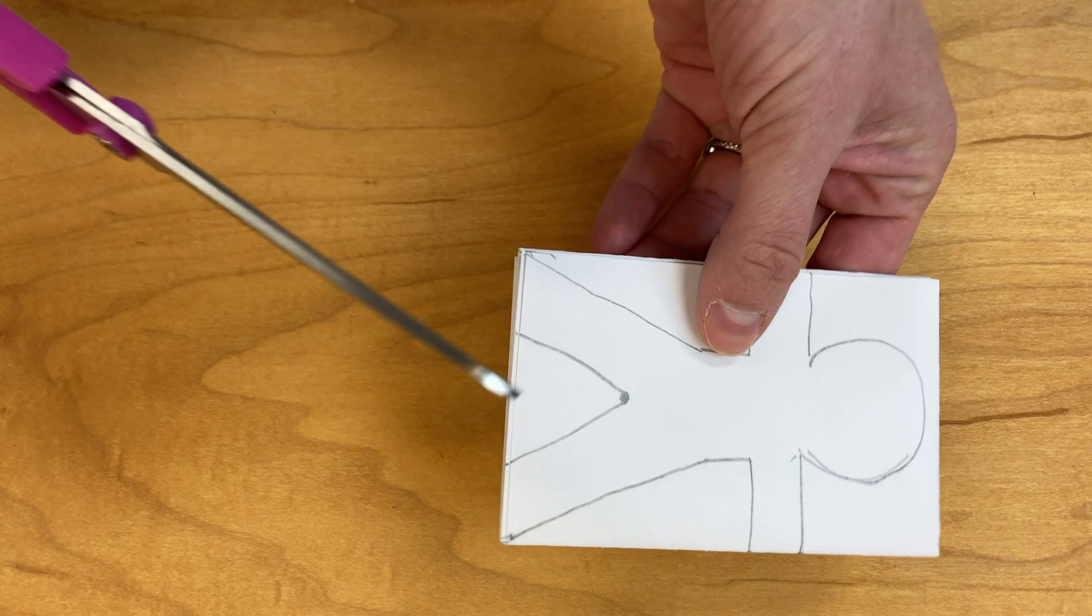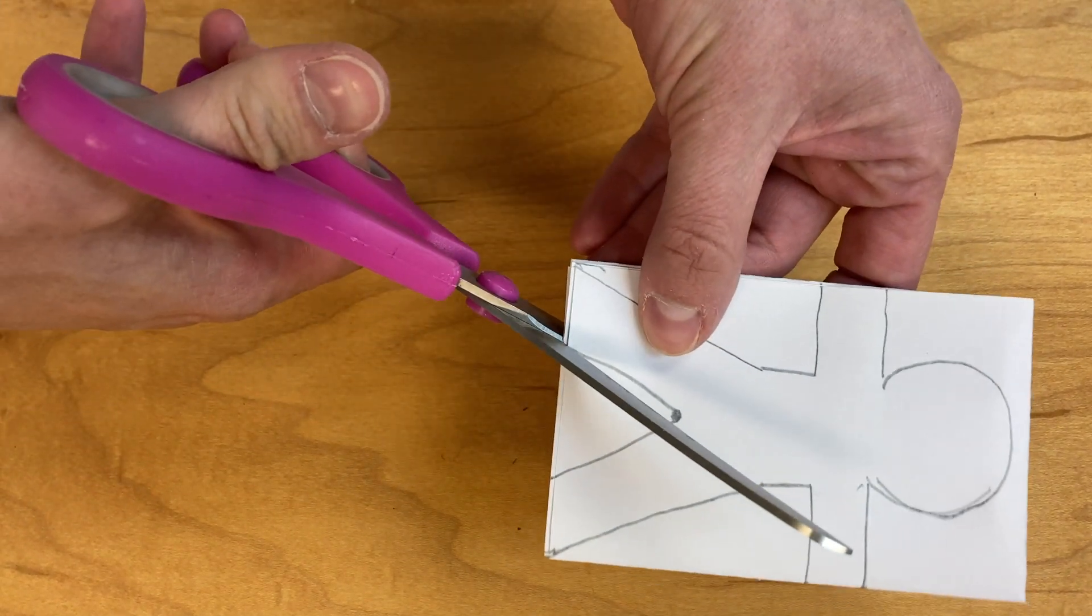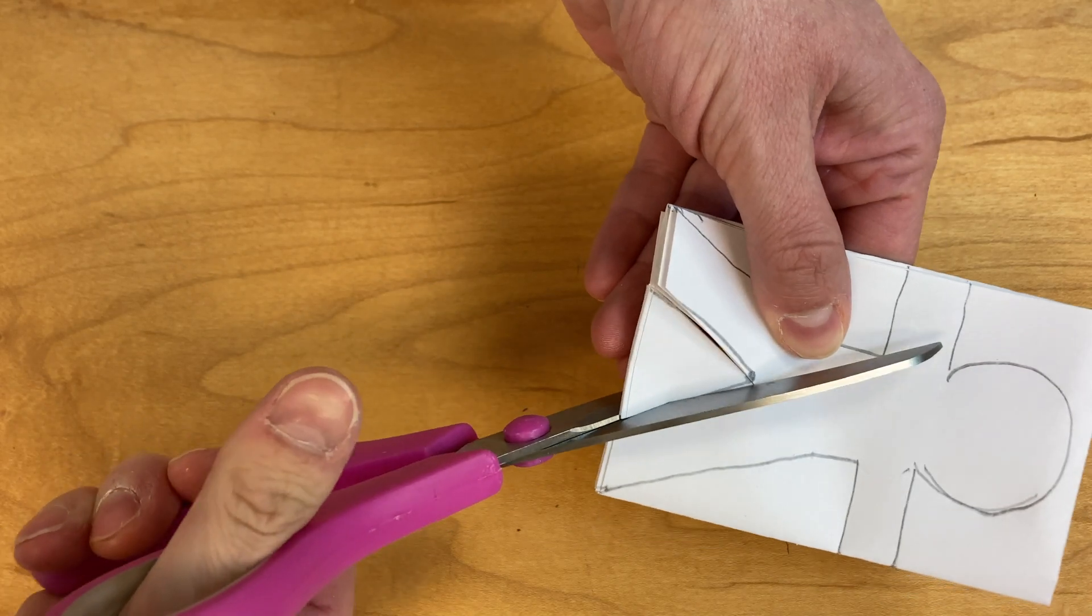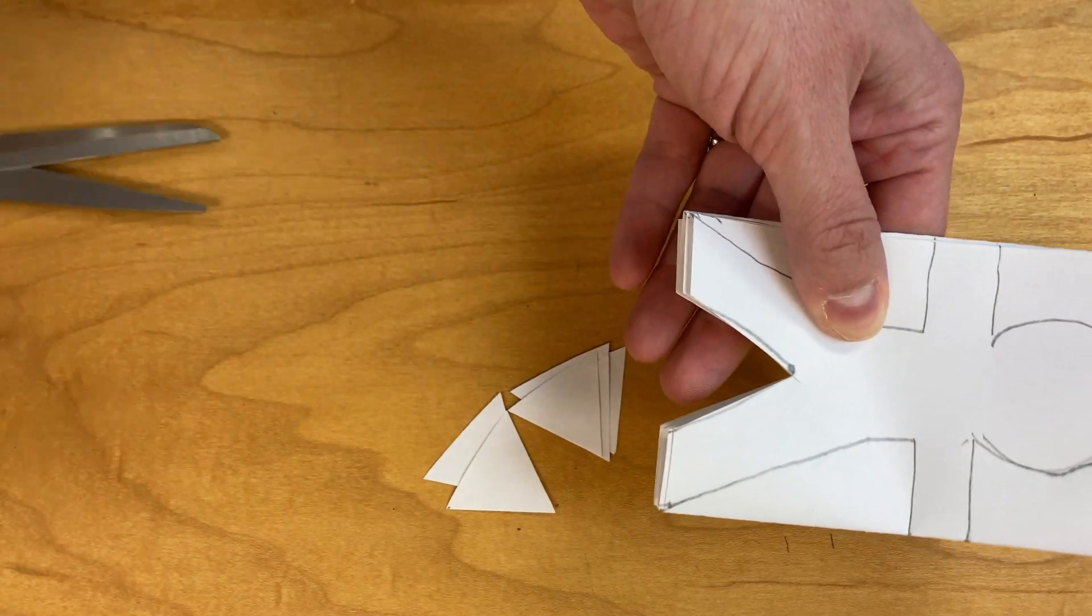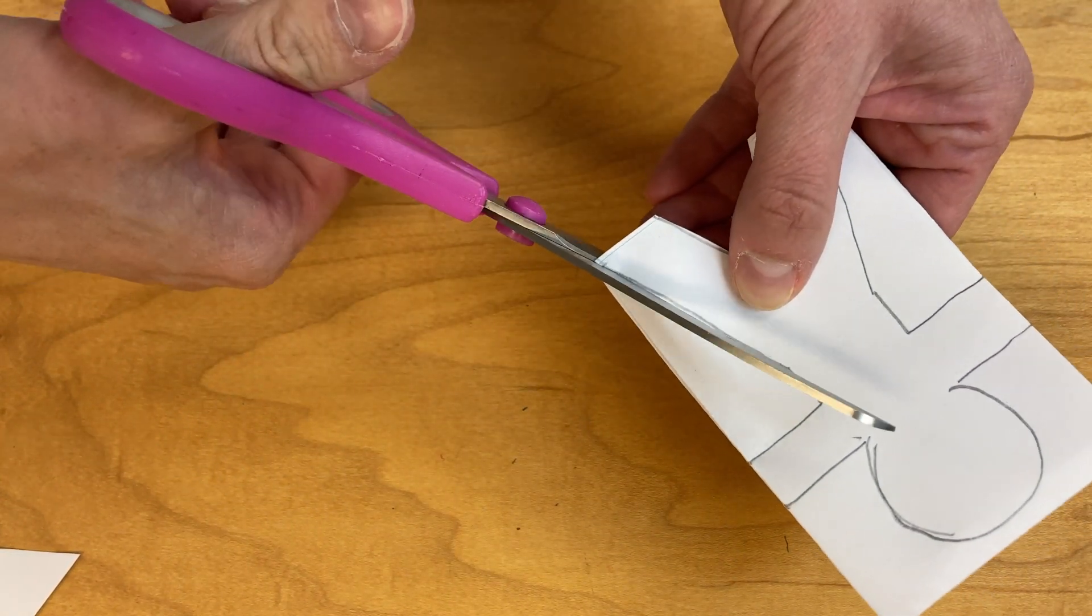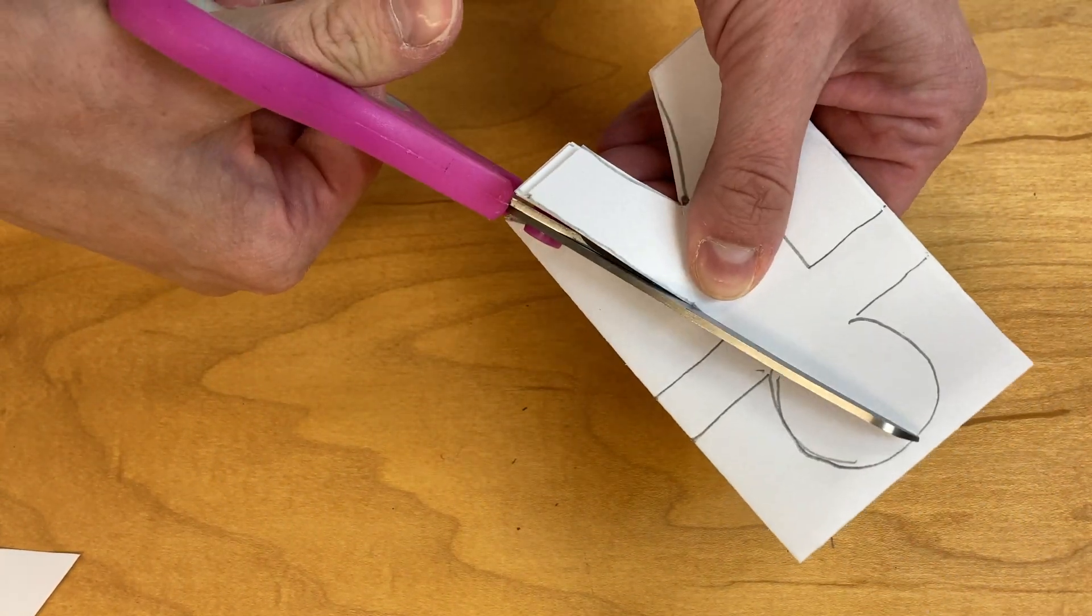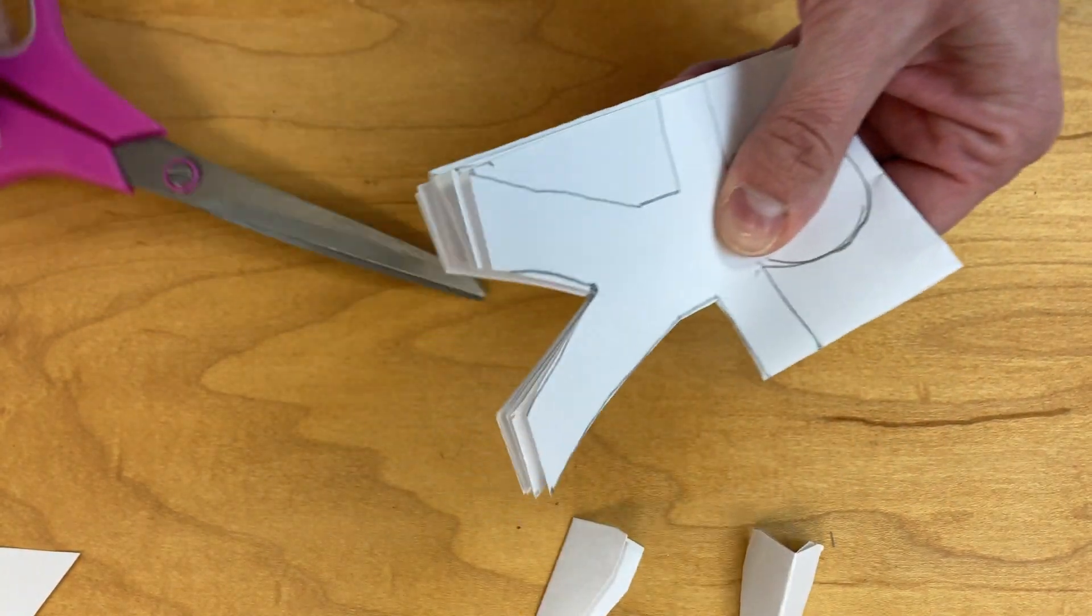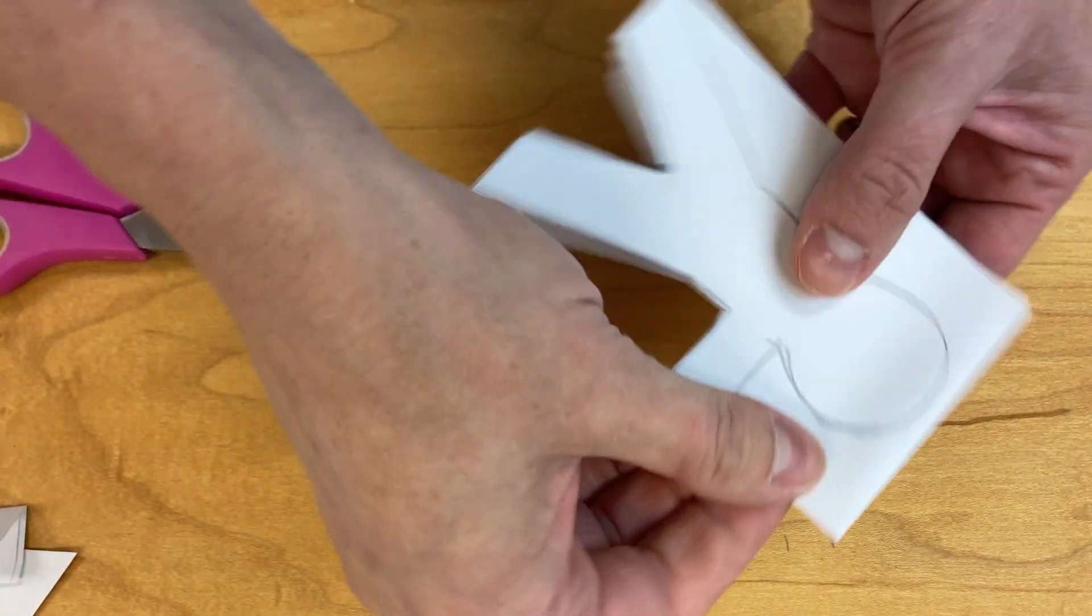Now I'm going to take my scissors and I'm going to cut out these pieces that I have drawn, and those are pieces that I'm just going to throw away. So then I'll follow the leg lines that I drew all the way up, staying on these lines and cutting all the way out to the edge, just like that.